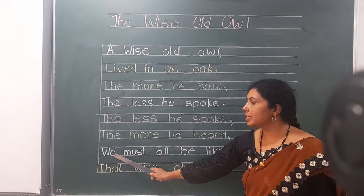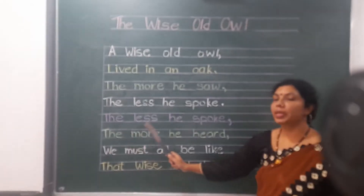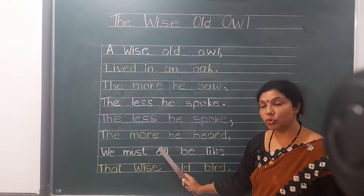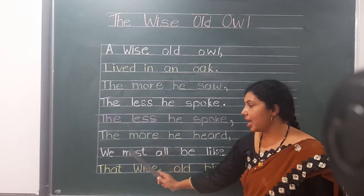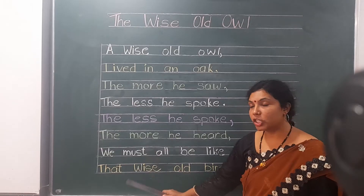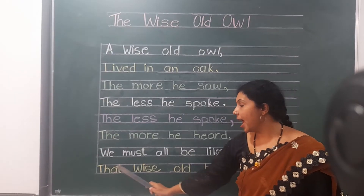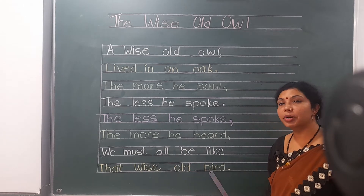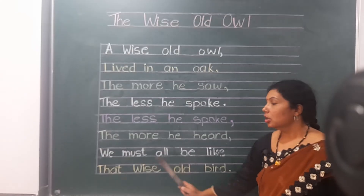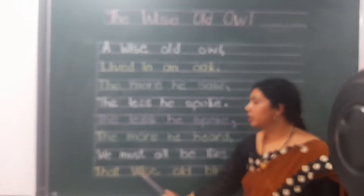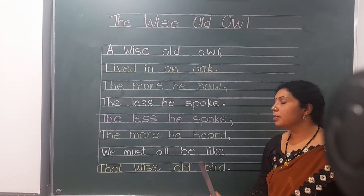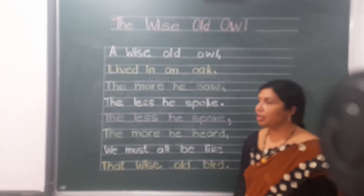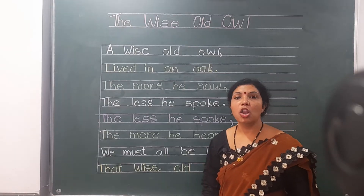We must all be like — hum sab ko bhi uski tarah zarur se hona chahiye. Kiski tarah? That wise old bird — us buddhiman old bird ki tarah.